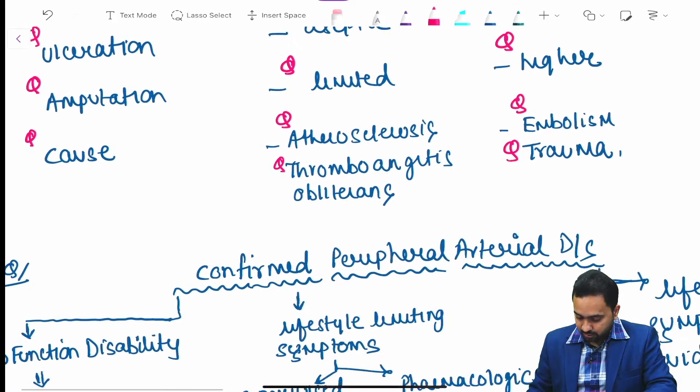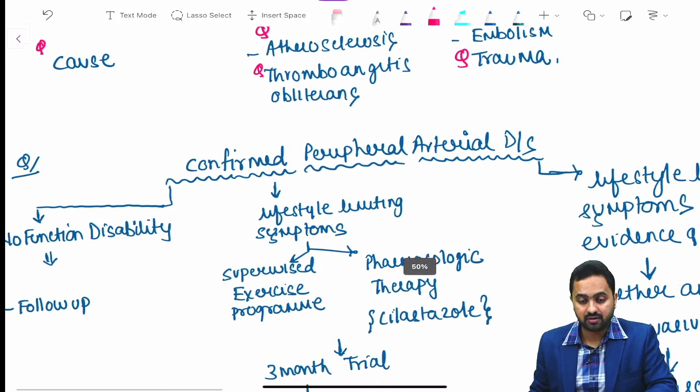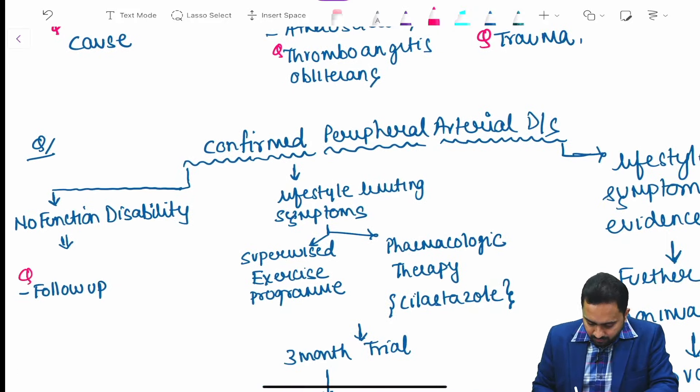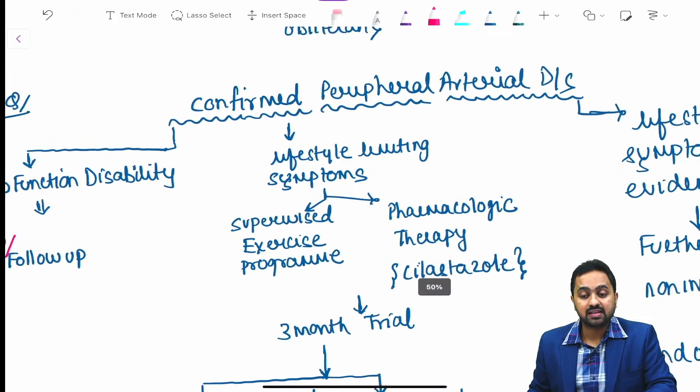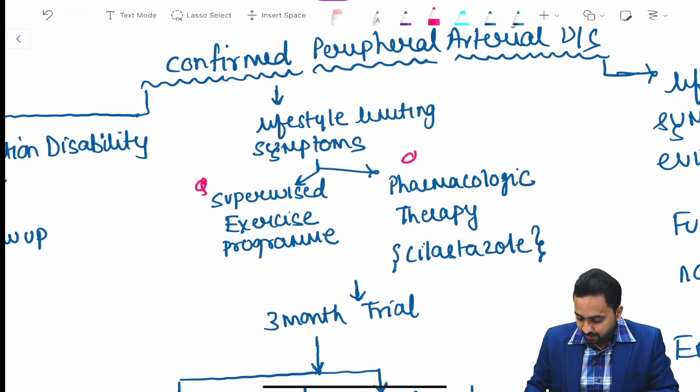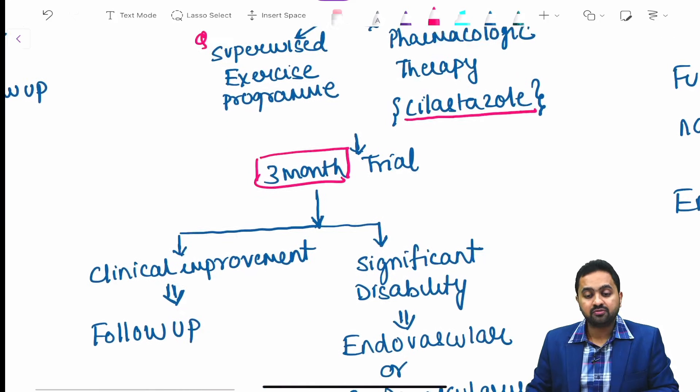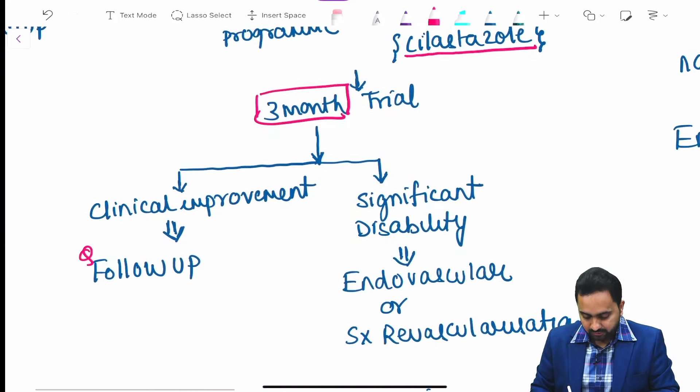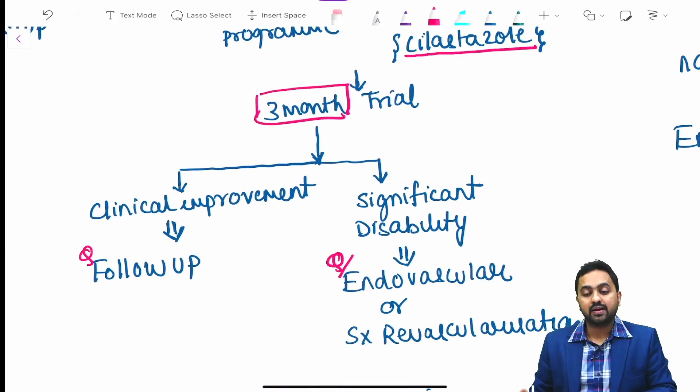Regarding management, if we have confirmed peripheral arterial disease and no functional disability, follow-up should suffice. If the patient has lifestyle-limiting symptoms, supervised exercise program and pharmacological therapy with Cilostazol is started. A three-month trial is usually given. If it improves, we follow up. If significant disability, then endovascular or surgical revascularization may be needed.